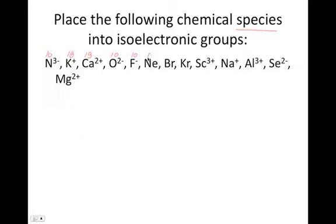Neon, no charge, so it has 10. Bromine doesn't have any kind of a charge, so it's going to have 35 electrons. Krypton with no charge has 36 electrons. I'm pretty sure this bromine was supposed to have a negative 1 charge. Scandium usually has 21 electrons. It's lost 3, so it has 18. Sodium usually has 11, it's lost 1, so it's down to 10. Aluminum usually has 13, it's lost 3, so it's down to 10. Selenium usually has 34, it's gained 2, so it's at 36. Magnesium usually has 12, it's lost 2, so it's down to 10.